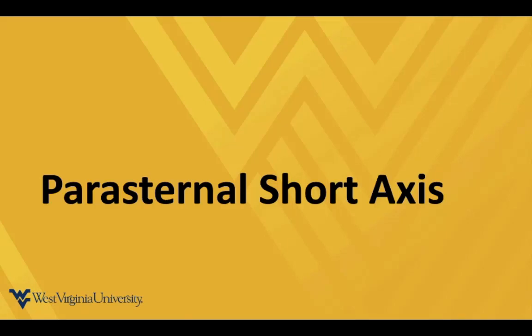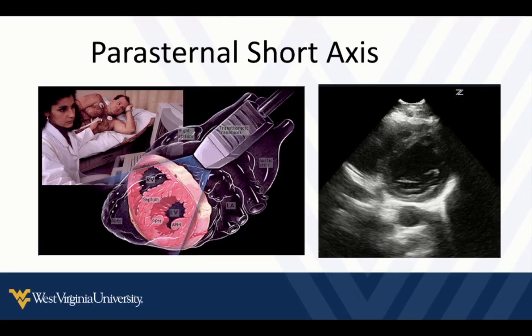Once we get that view we're going to move to the parasternal short axis. The probe is in the same position on the chest, but we want to identify our parasternal long axis view and then rotate the indicator to about one o'clock, so about 90 degrees clockwise, to identify short axis views of the heart. We're getting cross sections focused on the left ventricle, but we'll see other structures as well.